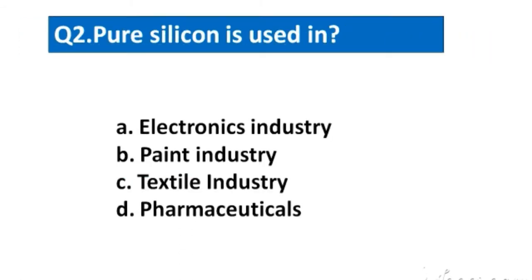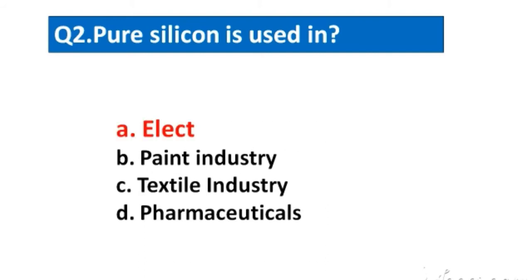Question number 2. Pure silicon is used in. The options are A. Electronic industry, B. Paint industry, C. Textile industry, D. Pharmaceuticals. The right answer option A. Electronics industry.